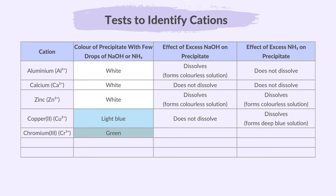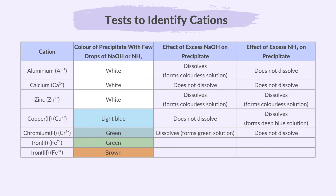For chromium ions, a green precipitate forms, dissolving in excess sodium hydroxide to form a green solution, but not in excess ammonia. For both iron 2 and iron 3 ions, green and brown precipitates form respectively, neither of which dissolve in excess sodium hydroxide or ammonia.